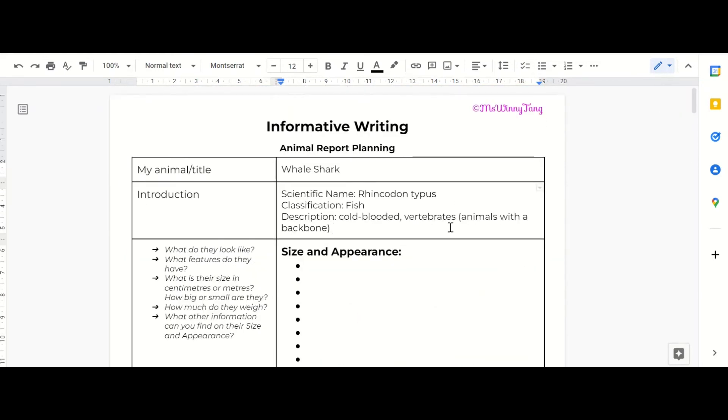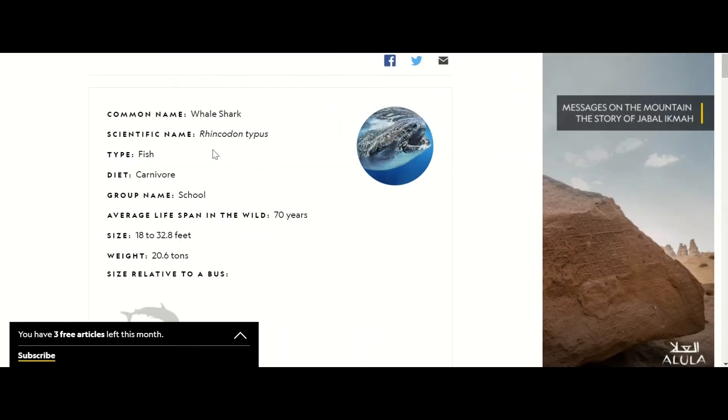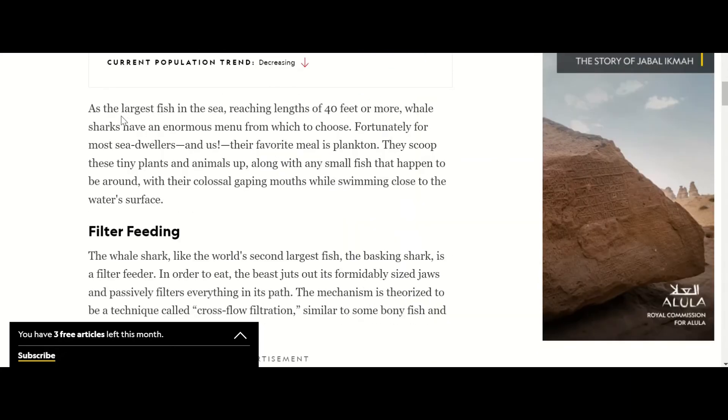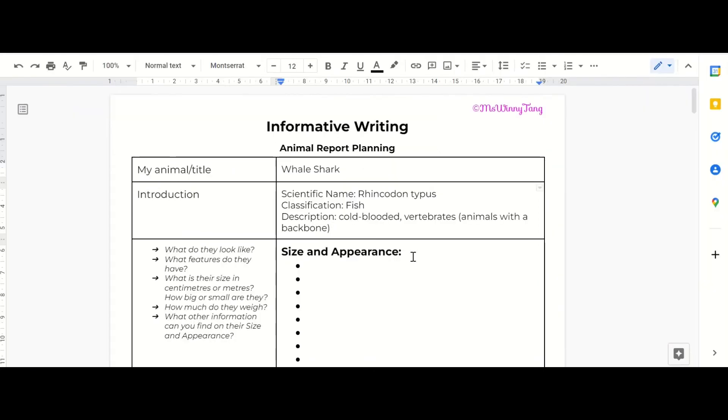Now I'm just going to have a look and just quickly scan to see if there is any other information that I want to add in the description. So diet, lifespan, size, weight - these are all going to be some great information for the following paragraphs. Oh, I can put in largest fish in the sea. I'm just going to do a comma. Largest fish in the sea.